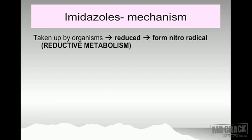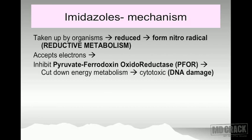This drug is very wise — it goes inside the microorganism and uses the organism's own enzymes to get reduced into a nitro radical. When this nitro radical is formed, it starts accepting electrons and is able to inhibit pyruvate ferredoxin oxidoreductase, known as PFOR.